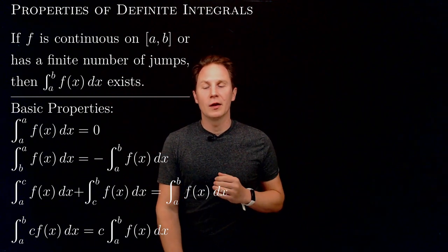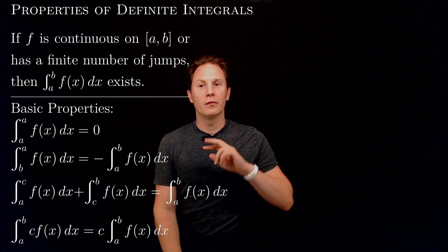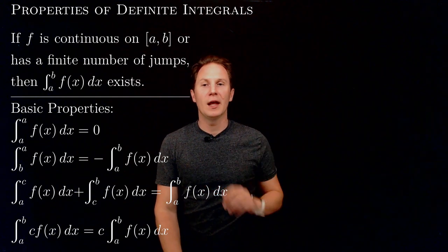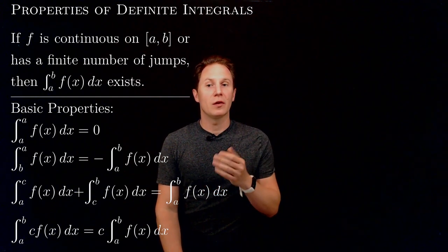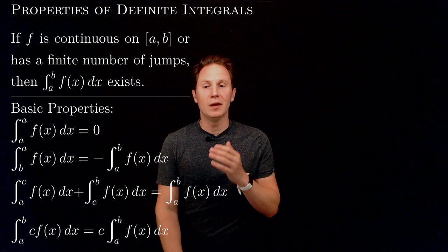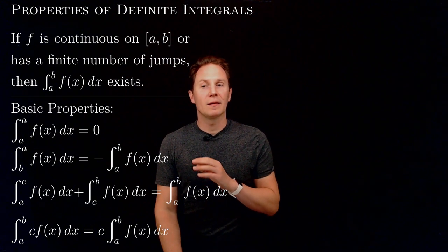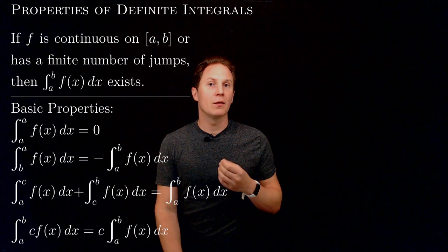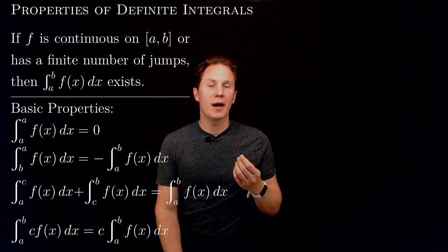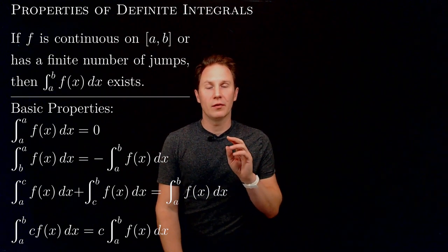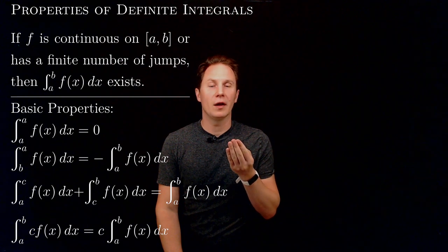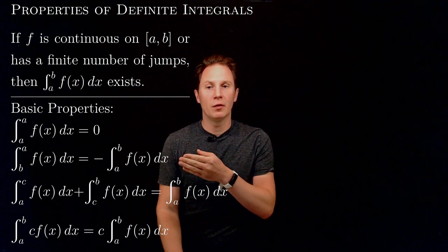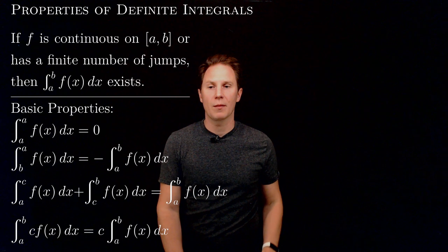The second property expresses the fact that if we flip the endpoints, so we integrate from b to a instead of a to b, we get an overall minus sign. That comes from the fact that in the definition — the Riemann sums — the delta x picks up an overall minus sign, hence even in the limit we get that minus sign.